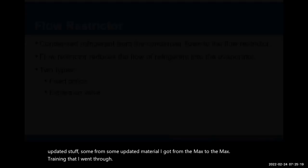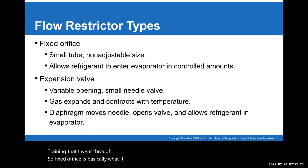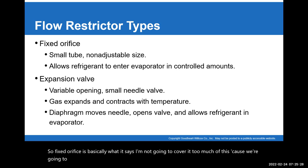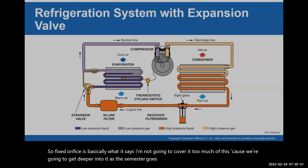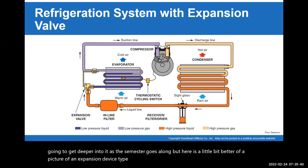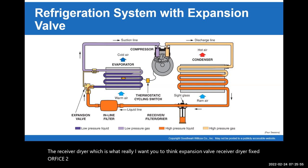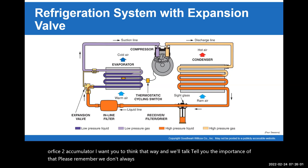I'll talk about some more updated stuff from MAX training I went through. Fixed orifice is basically what it says — I'm not going to cover too much here because we'll get deeper into it as the semester goes along. Here's a better picture of an expansion device type system. This one has the compressor, the condenser, the receiver dryer, then the expansion valve. I want you to think: expansion valve, receiver dryer, fixed orifice tube, accumulator — and we'll tell you the importance of that. Remember, we don't always have an inline filter in the systems.